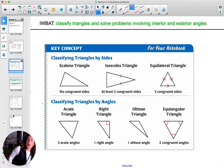Then we're also going to talk about classifying triangles by their sides and angles. So for sides, if there are no congruent sides, every length here is different, then it's considered scalene.